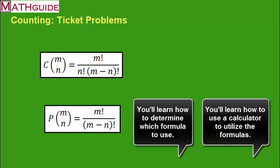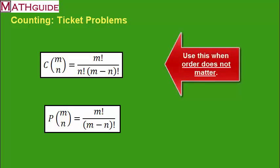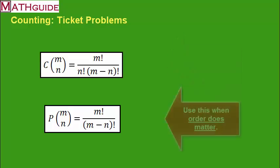Part of knowing which function to use depends on the problem. You use the combination formula, the top formula, when order does not matter. You use the formula with the P, called the permutations, when order does matter.